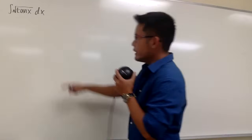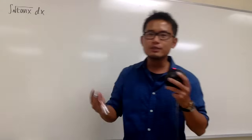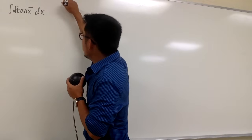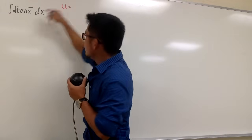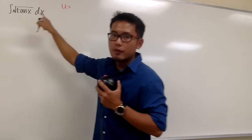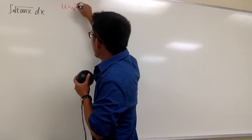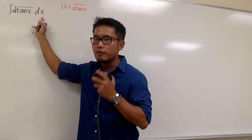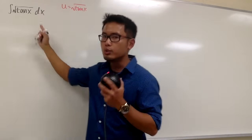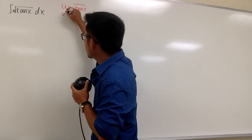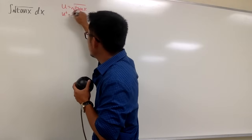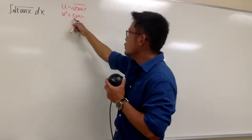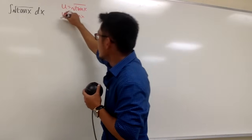To integrate square root of tangent x, we are going to first do a u-substitution. Let u equal to the square root of tangent x. We will take this integral from the x world to the u world. Let's go ahead and square both sides, because this way it's easier to differentiate. So u squared is equal to tangent x, and then we differentiate.